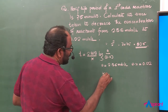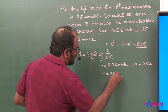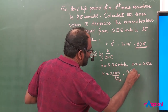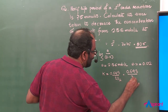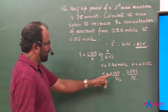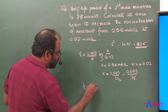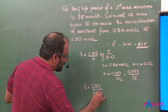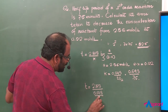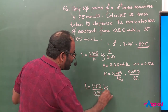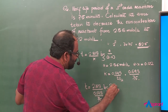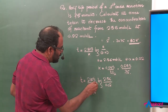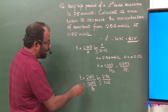The rate constant K equals 0.693 divided by T-half. Here T-half equals 75 minutes, so K equals 0.693 divided by 75. Substituting into the total time equation: T equals 2.303 divided by (0.693 divided by 75), into log of 2.56 divided by 0.02.